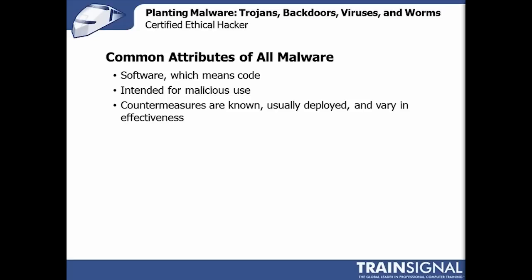These countermeasures are not always effective, which is why this kind of attack is always worth attempting — especially if you do the footprinting correctly and know what might or might not be expected. You can also potentially compromise the countermeasures themselves: get users to disable a virus scanner, or shut down a firewall long enough to get something through. Remember, these malware attacks work in conjunction with all the other footprinting, enumeration, and compromise techniques you've covered.